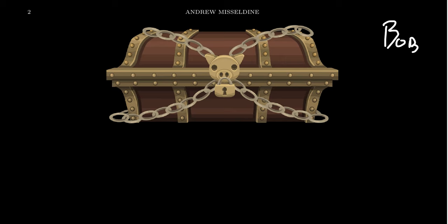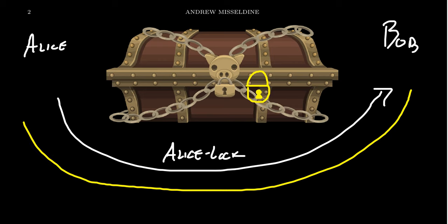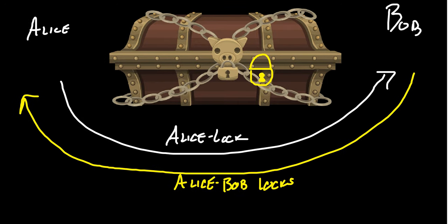Bob can't open the treasure chest either, because he doesn't have Alice's key to open the lock. Only Alice does. So what Bob is going to do is Bob is going to place a second lock on the treasure chest, a lock that only he has the key for. So what we saw here is that Alice sent this locked treasure chest to Bob, and it has one lock on it. This treasure chest had Alice's lock on it. So what Bob is going to do, he's going to put his lock on the treasure chest, and he's going to send it back to Alice. So this time it has two locks on it.